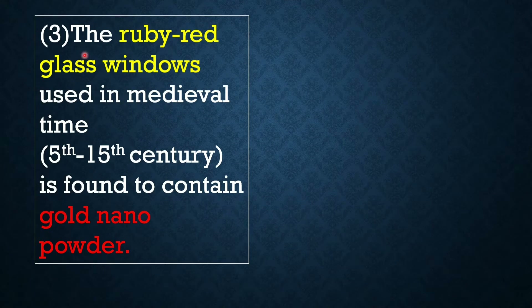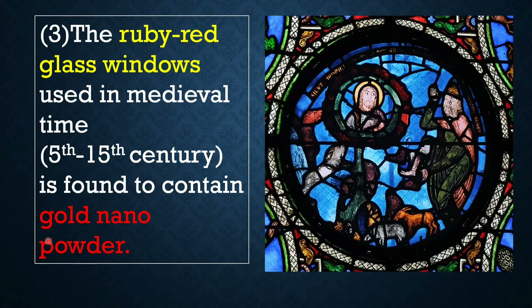Similarly, the ruby red glass windows used in medieval times — that is, the 5th to 15th century, roughly 600 to 700 years ago — are found to contain gold nanoparticles. You can see here the ruby red glass windows used in medieval times. Gold nanoparticles were used in them to provide a decorative glaze and make them look more beautiful.